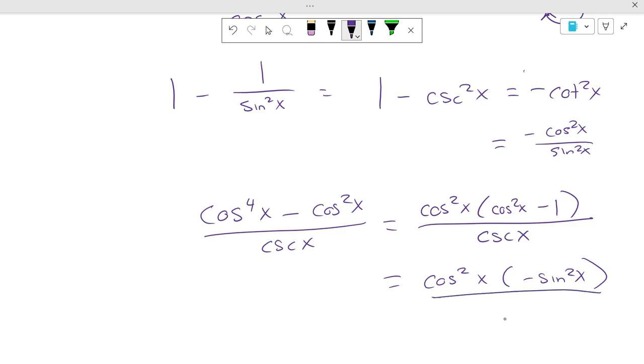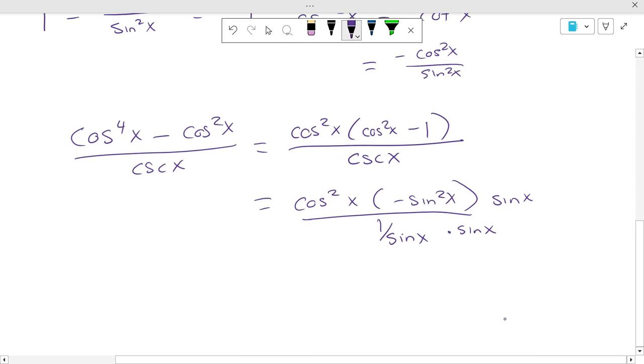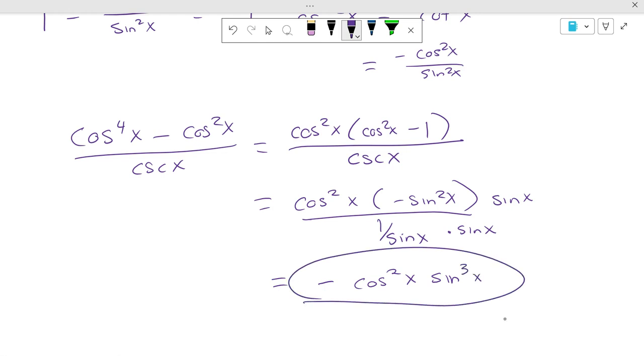What's cosecant the same as? 1 over sine of x, right? Now, I got a complex fraction going on, don't I? So what do I do to the top and bottom? I'll multiply by sine of x. So the negative comes up front, and I get negative cosine squared of x sine to the third power of x.